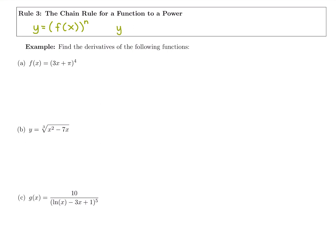The way we apply it: y prime — we're going to bring down the power, subtract one for the new power, put that original function to the new power, and then at the very end multiply by the derivative of the inside. So: bring down the power, keep the same inside, raise it to the new power, and multiply by the derivative of the inside at the end.